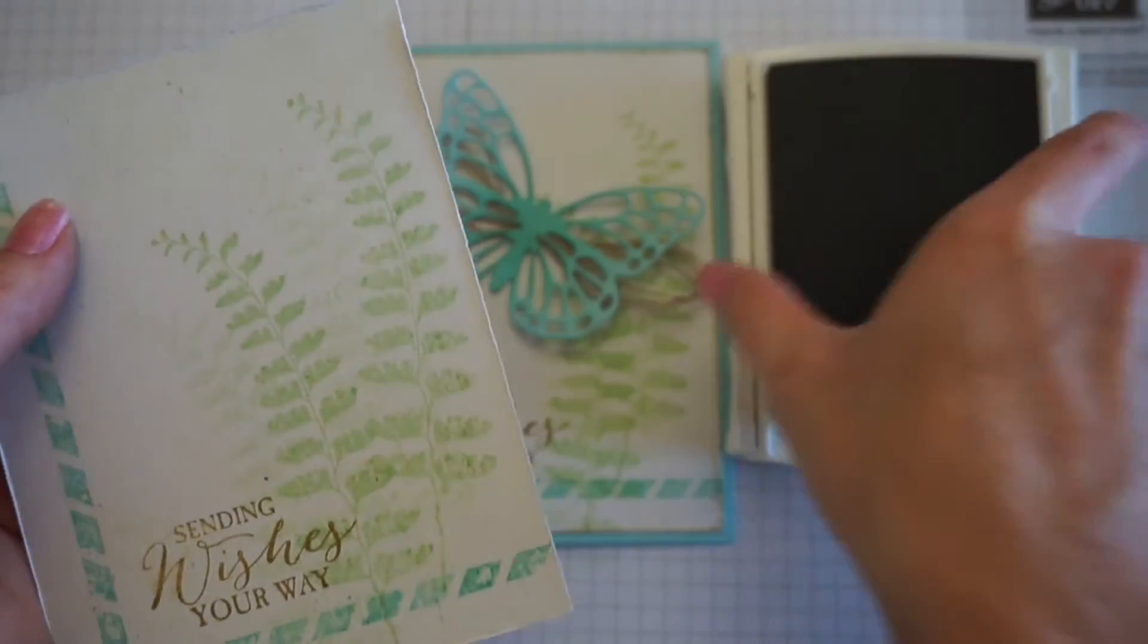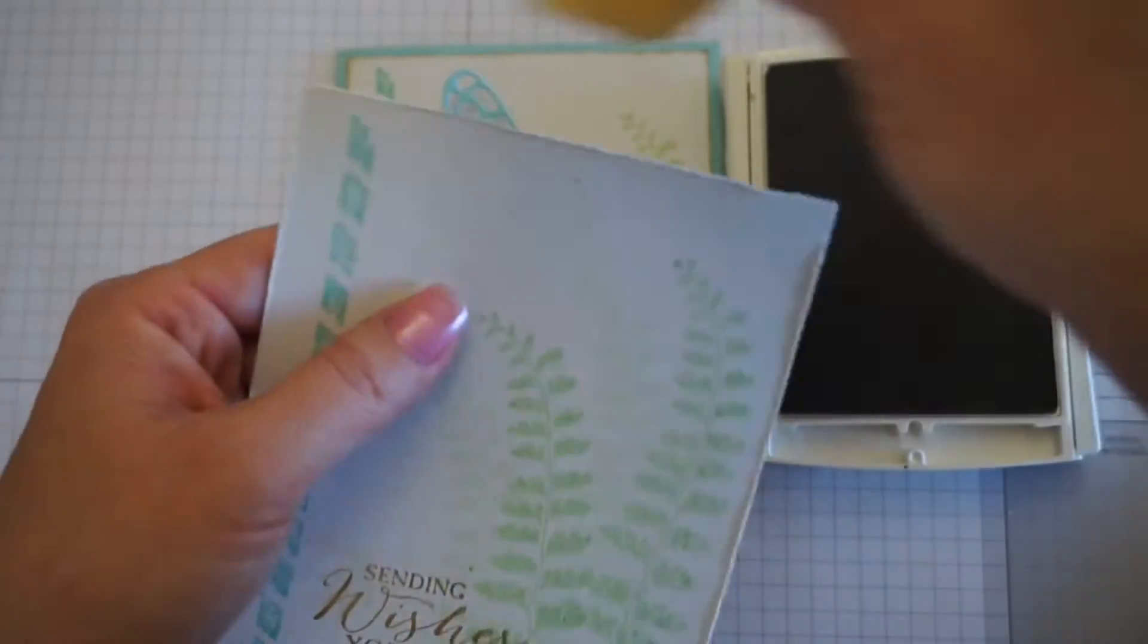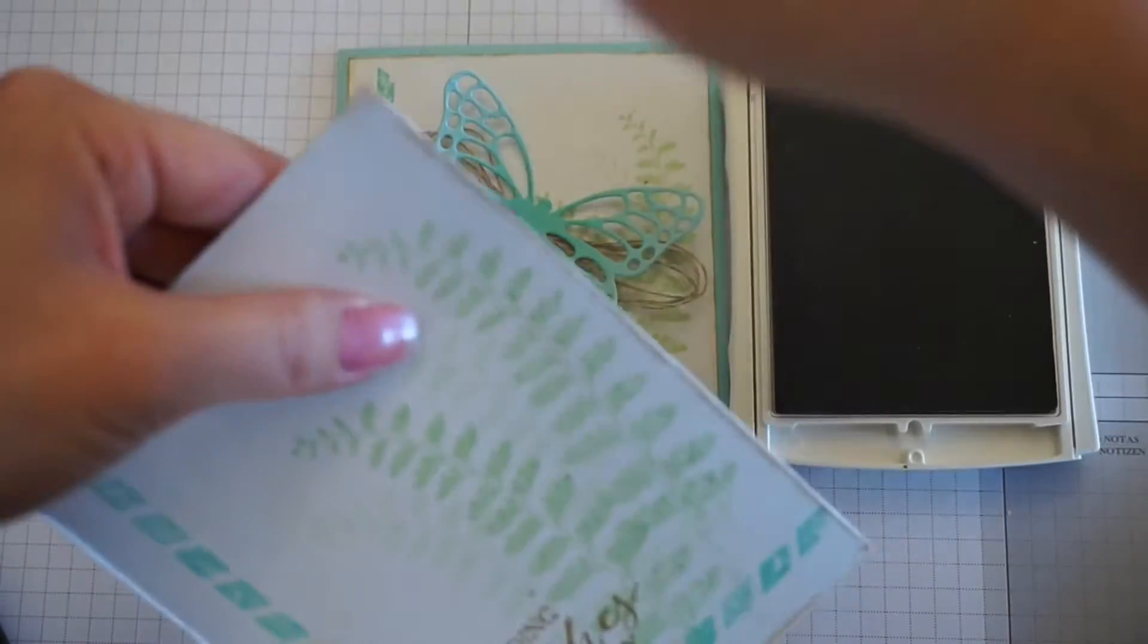Then you want to get the baked brown sugar ink with a sponge and just sponge those edges.